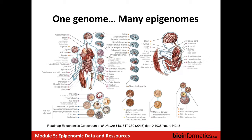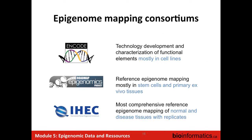This work really started with the ENCODE consortium, which took on the task of systematically profiling the default state of various cell types. This continued in the NIH Roadmap, and now there's an international consortium called IHEC that continues this work, involving a number of countries. IHEC continues the effort of trying to map the normal epigenetic state of many different tissues.